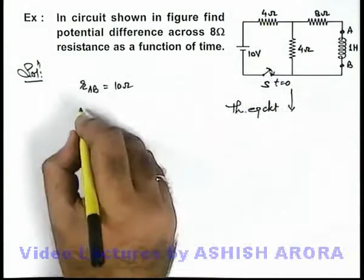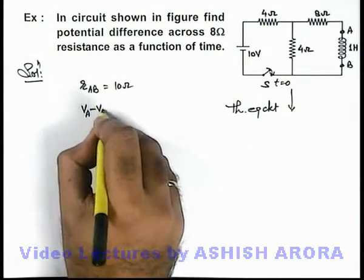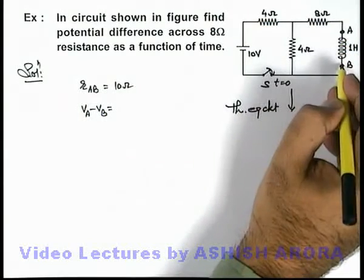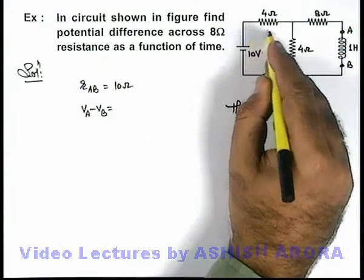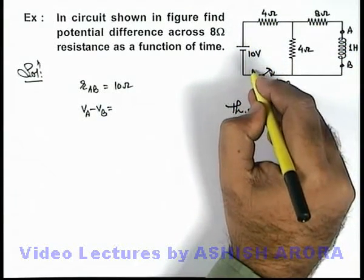And if we calculate the potential difference across A and B, V_A minus V_B under open circuit situation, then only current which will flow through will be this loop.